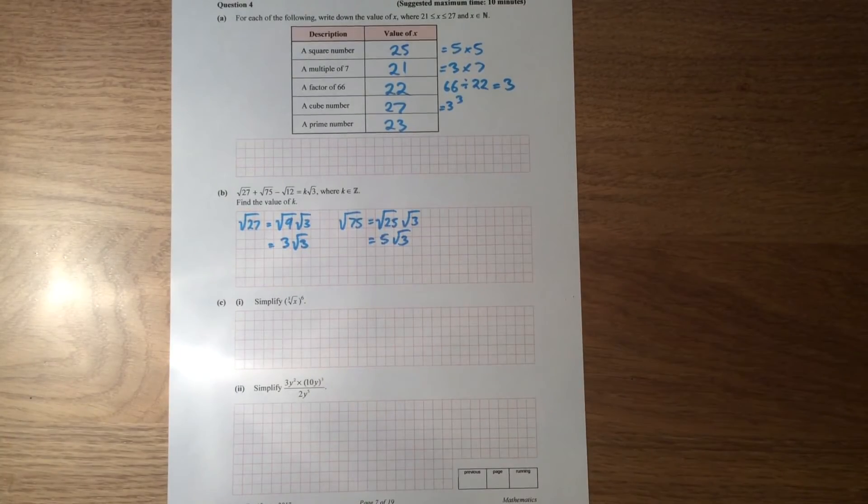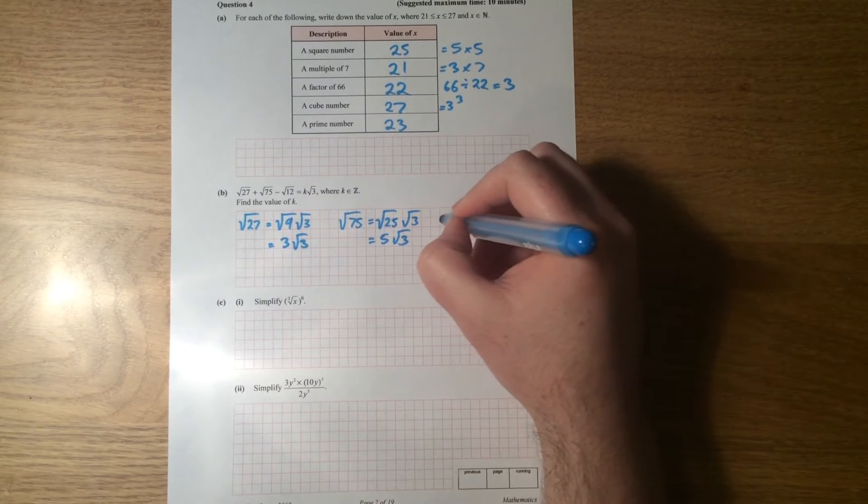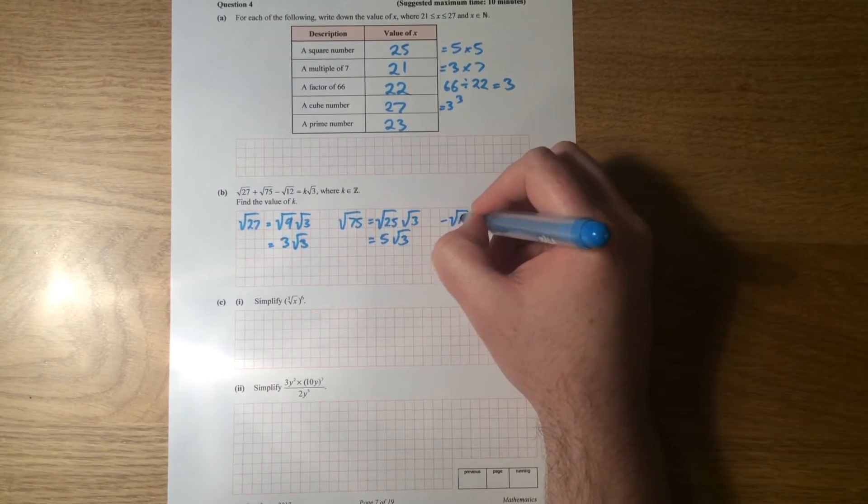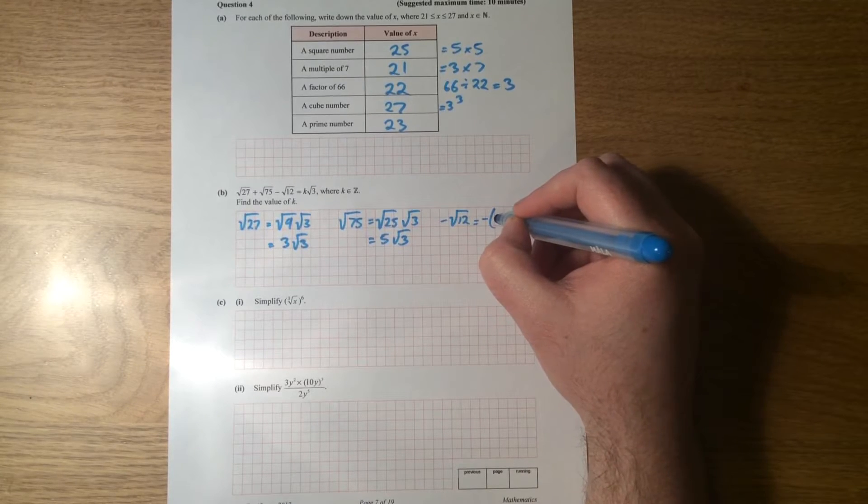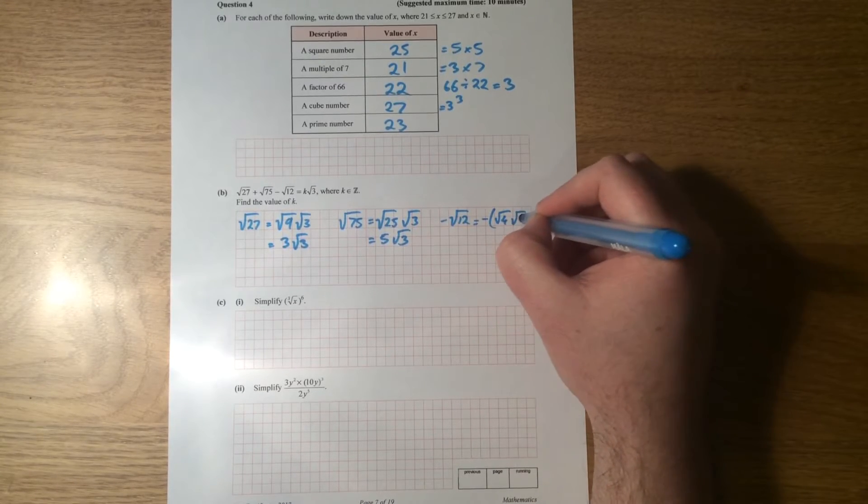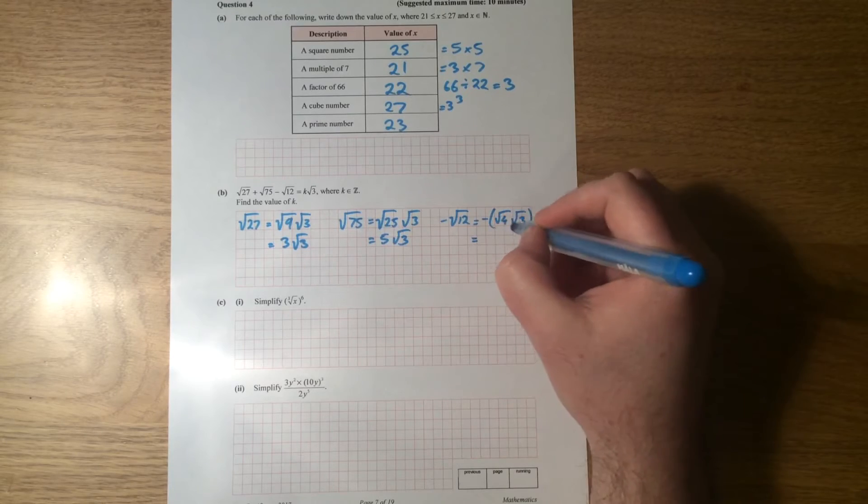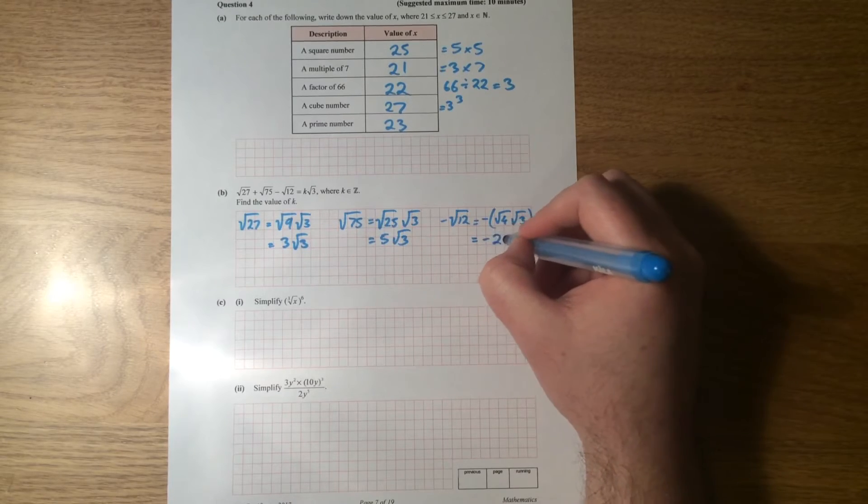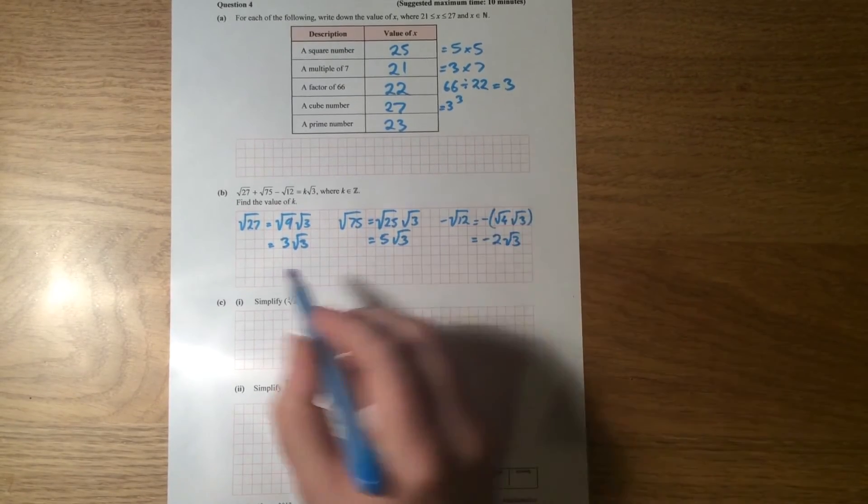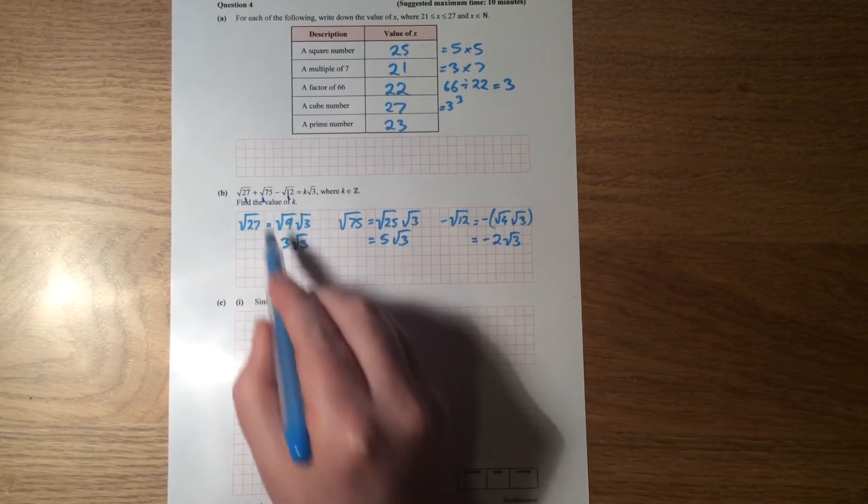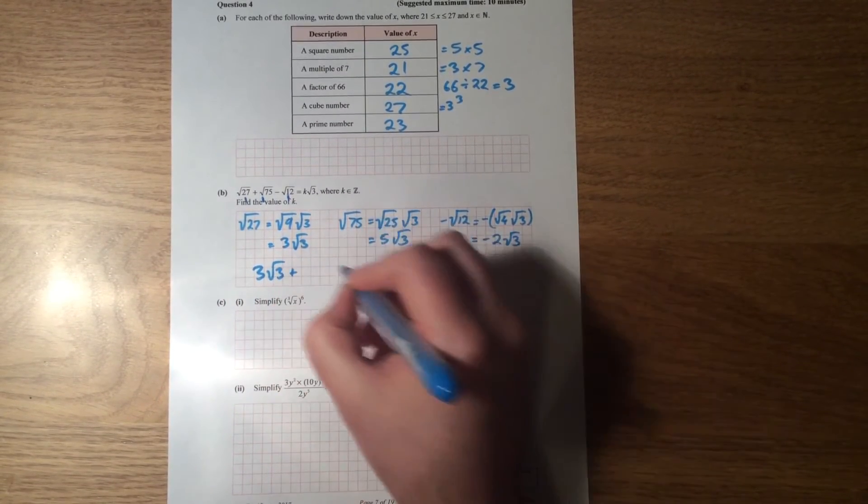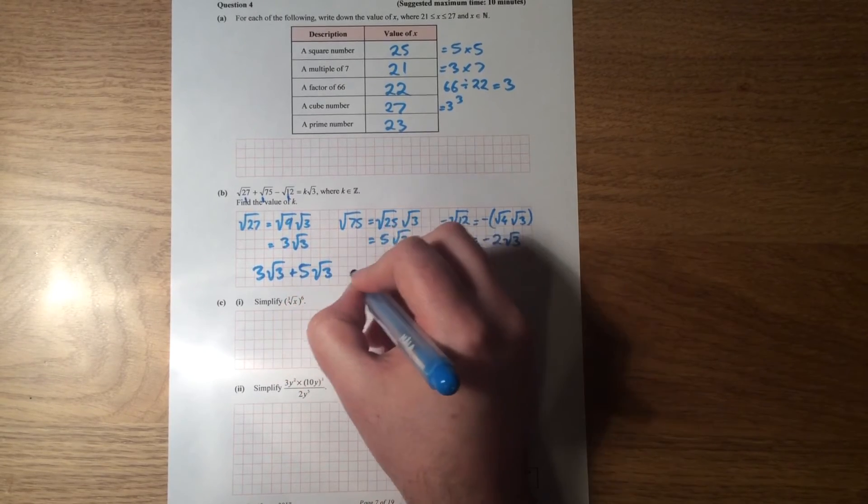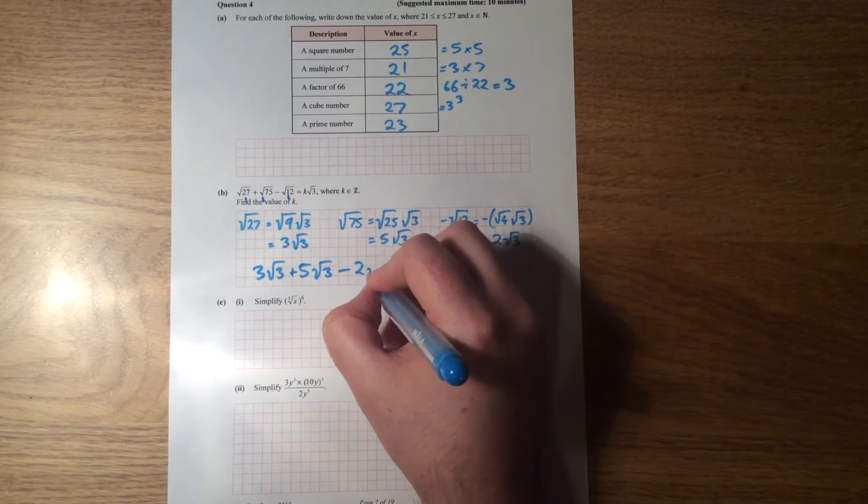All right, and then minus 12, I'm going to say minus 12, the square root of 12 is going to equal minus the square root of 4 multiplied by the square root of 3, which is equal to minus 2 root 3. Okay, so now I can replace these three values with each of these. So I get 3 root 3 plus 5 root 3 minus 2 root 3.